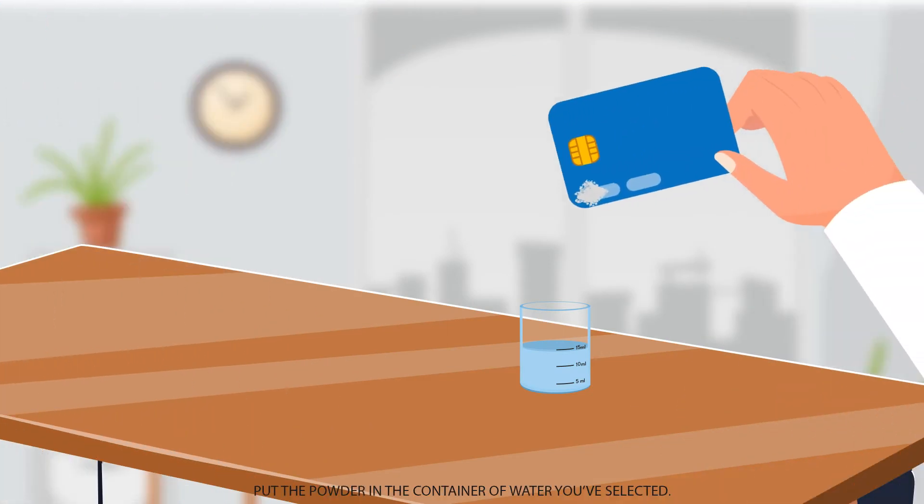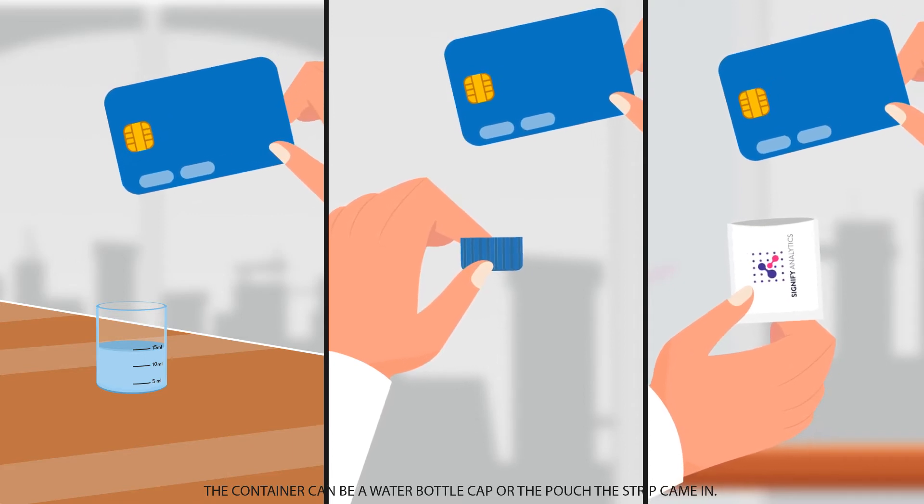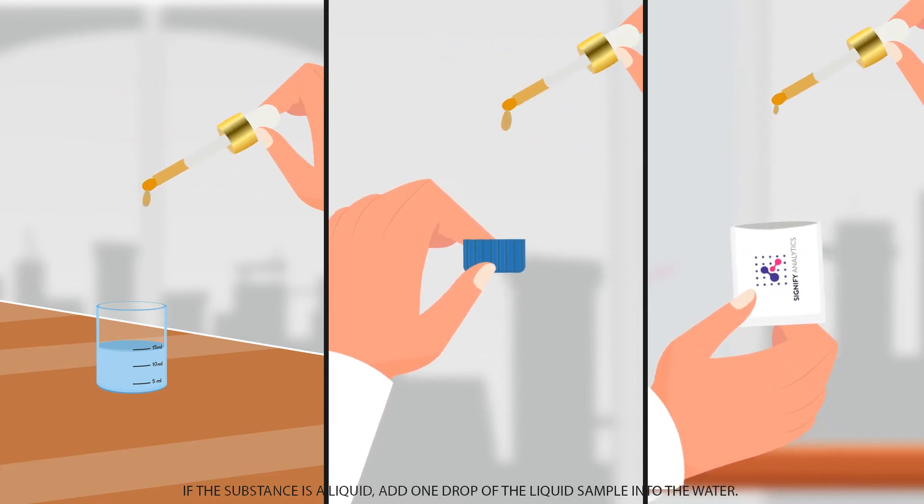Step 1. Put the powder in the container of water you've selected. The container can be a water bottle cap or the pouch the strip came in. If the substance is liquid, add one drop of the liquid sample into the water.